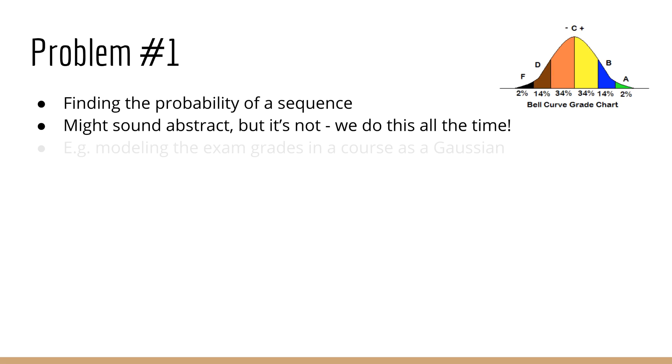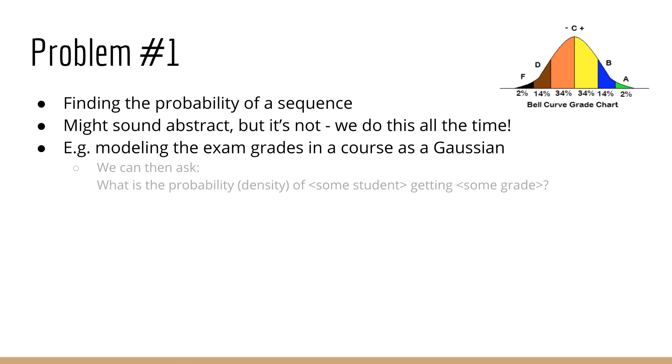For example, suppose we are using a Gaussian distribution to measure the grades of everyone who took a math exam. We could then plug in a grade into the Gaussian formula. Note that this is not actually a probability but a probability density, although that's not a particularly relevant distinction at this point.